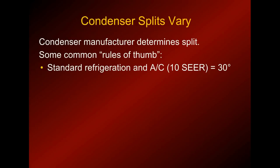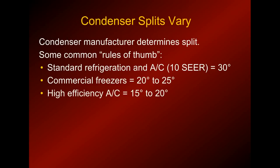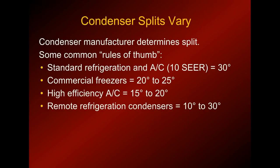Standard air conditioning at 8 to 10 SEER — those are your older units — have a 30 degree split. Commercial freezers are 20 to 25 degree split. High efficiency air conditioners at about 13 to 15 SEER are looking at 15 to 20 degree split. Get much higher above that and you have variable speed compressors, and these rules of thumb go out the window. Remote refrigeration condensers, like ice machines, are 10 to 30 degrees split.